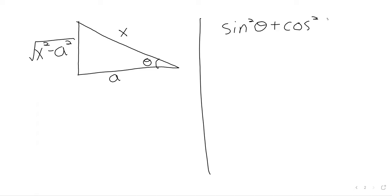Any time we use trig substitution, it's with the goal of getting rid of a square root — getting a perfect square under a square root so the square and the square root cancel. We'll always be using the Pythagorean identity, but there are variations of this identity that you should be familiar with.